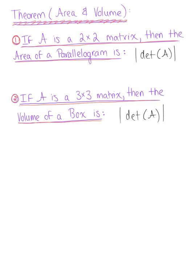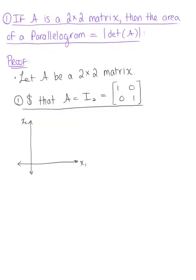Let's verify that case 1 holds true. If A is a 2 by 2 matrix, then the area of the parallelogram is equal to the absolute value of the determinant. In case 1, suppose that A is the identity matrix in two dimensions. We have the first elementary vector e₁, which is (1, 0), and the second elementary vector e₂, which is (0, 1). We are working with a unit square, and the area of a square is length times width, so 1 times 1 equals 1 square unit.